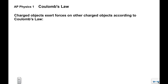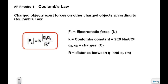Charged objects will exert forces on other charged objects according to what's called Coulomb's Law. This is on your formula sheet. F sub E is what's called the electrostatic force — the force that a charged object will exert on another charged object. It is a force, so it's measured in newtons. The K here is what's called Coulomb's constant, and it's nine times ten to the ninth newton meters squared per Coulomb squared. It's very large, which tells you something about the potential strength of electrostatic forces.